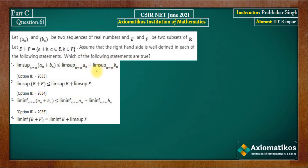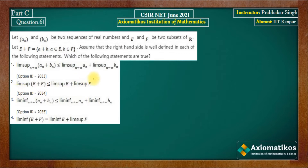This question in the exam has a controversial aspect — it involves LIMSUP of a set. The question paper did not define what LIMSUP of a set means. That is why we cannot solve those options. LIMSUP of a set is not defined in any standard book. Therefore, they should have mentioned what LIMSUP of a set means. So the second option cannot be solved because the question paper did not define what LIMSUP of a set is.